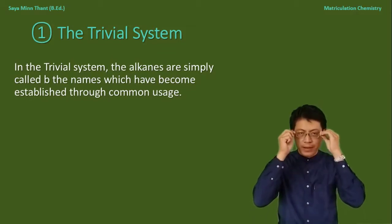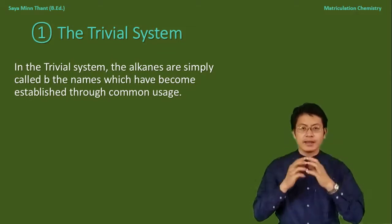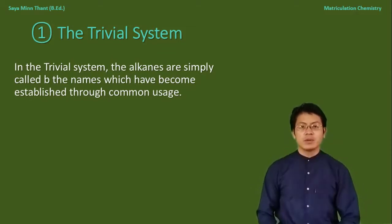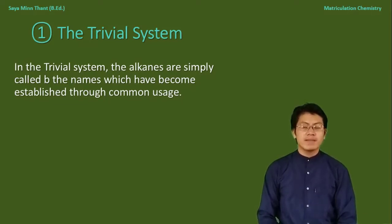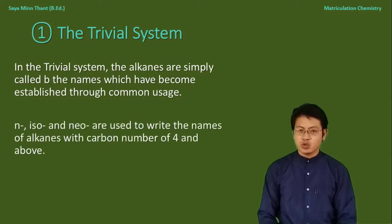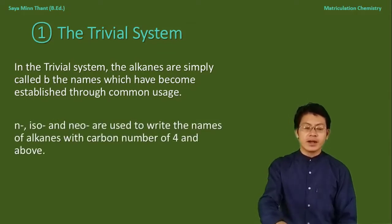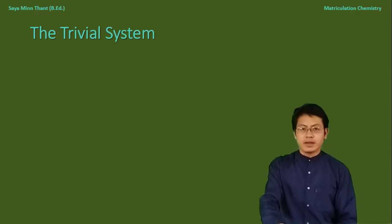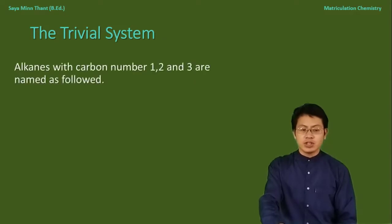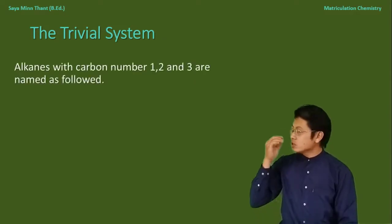Now we have the previous system of alkanes, which is usually called CH4, CH3 single bond — for example, methane and propane structures.